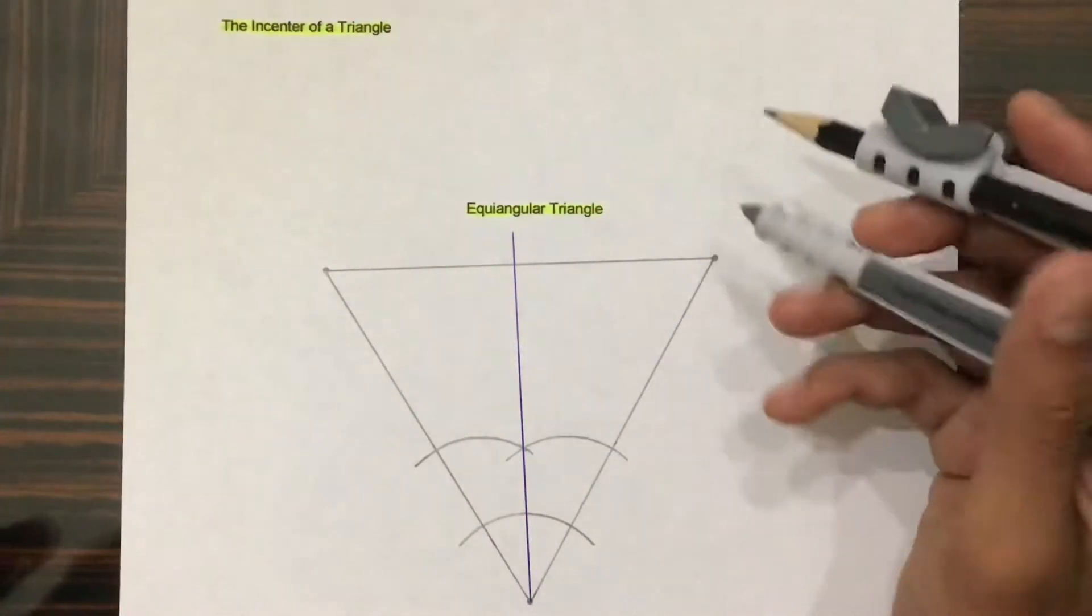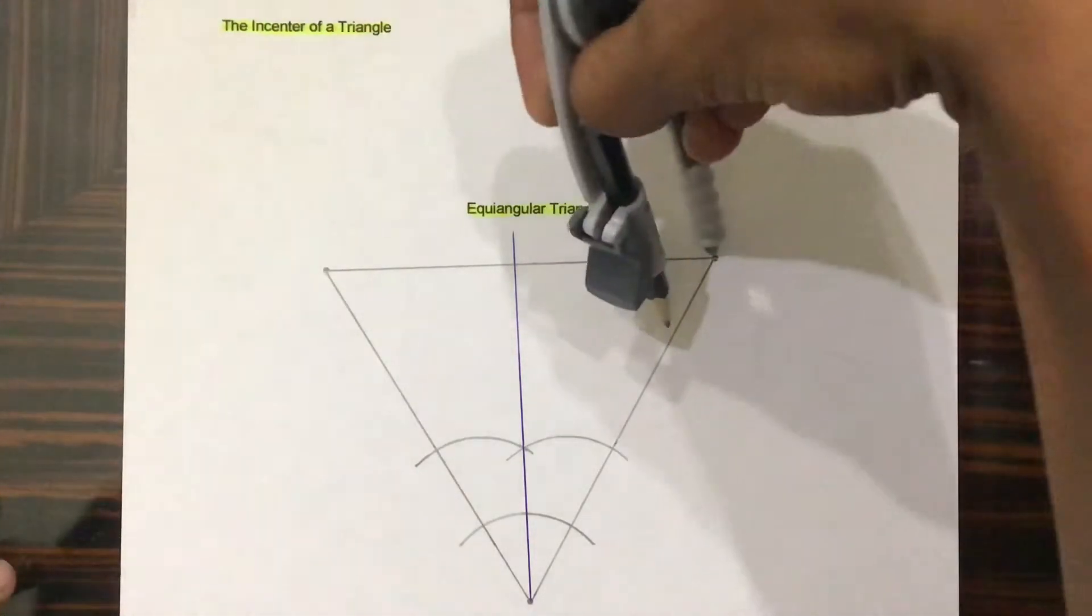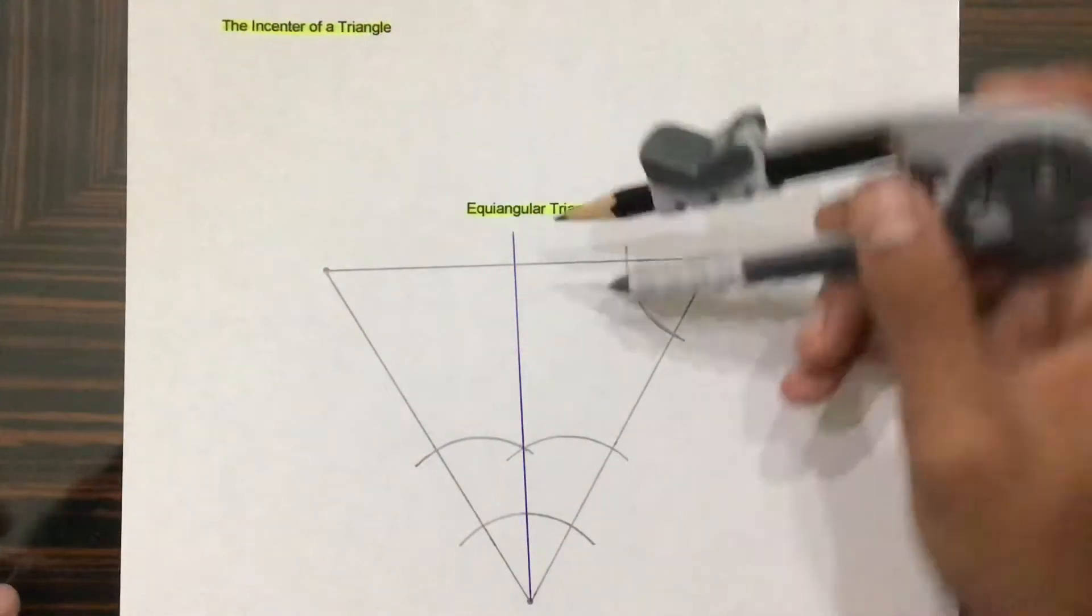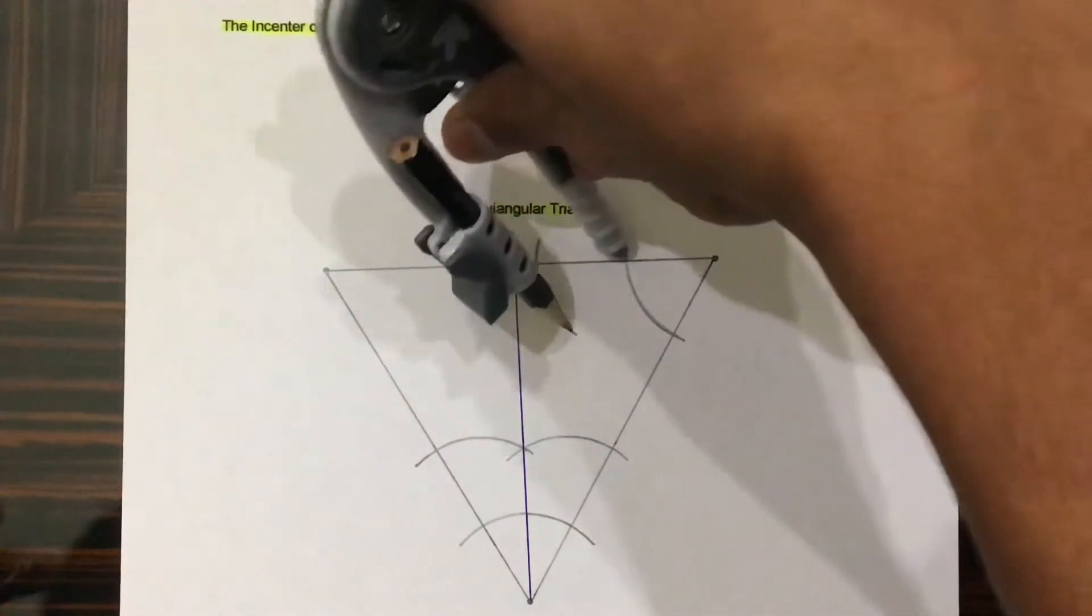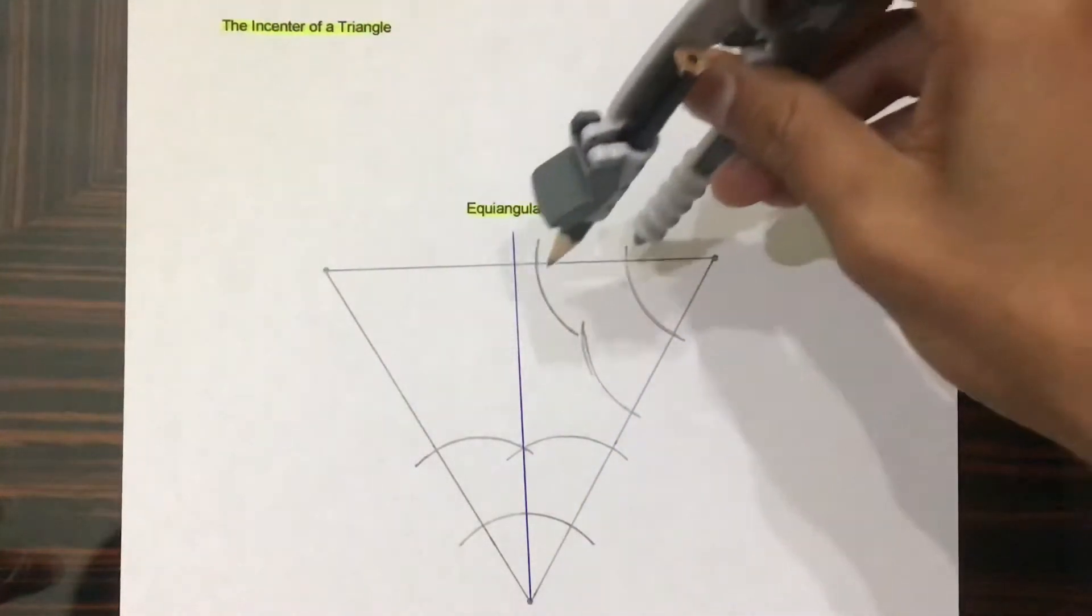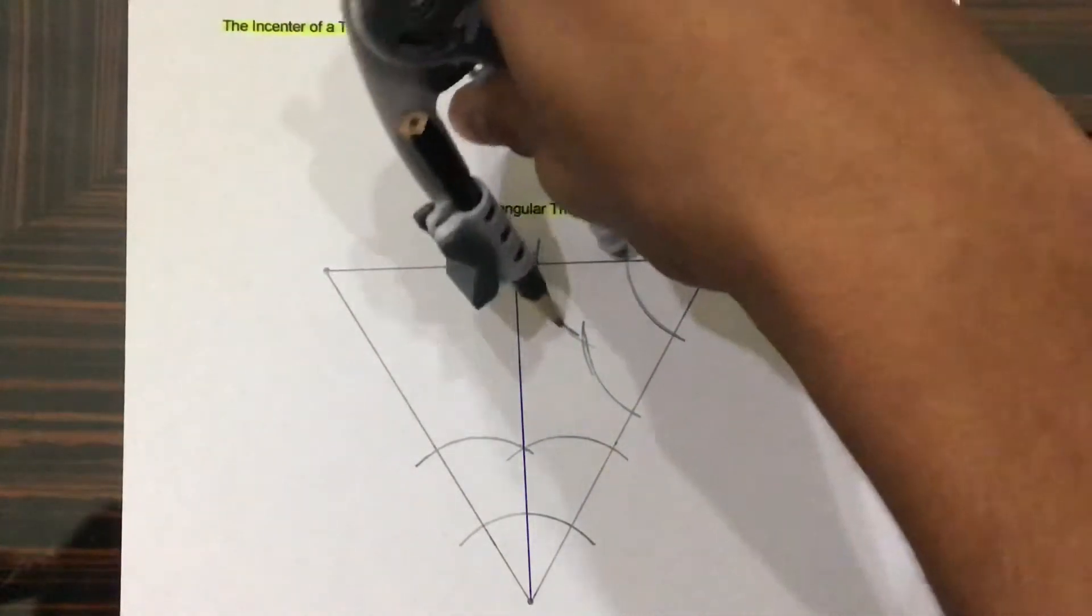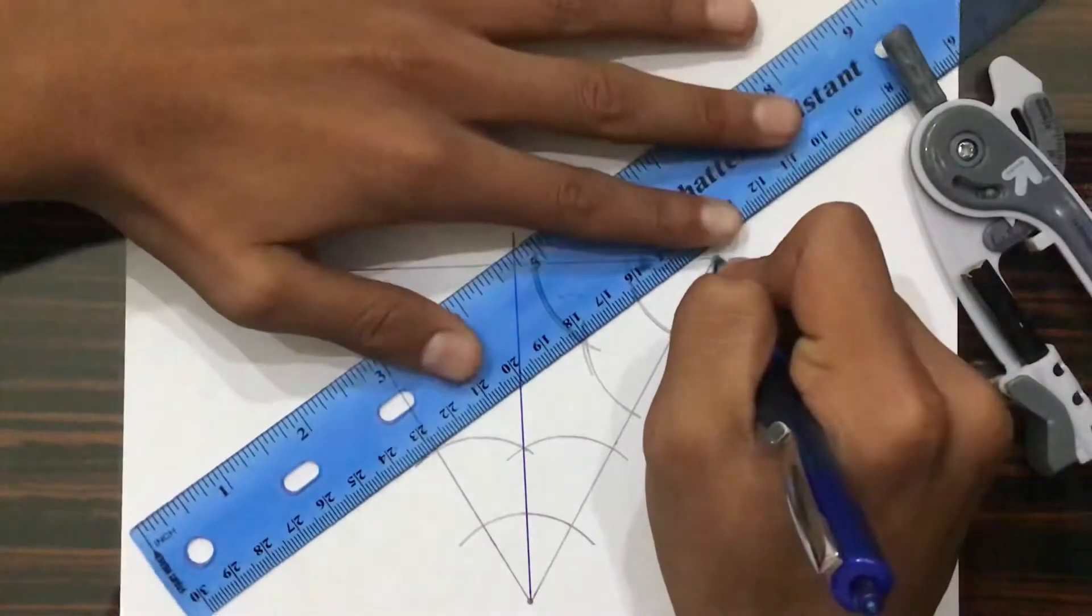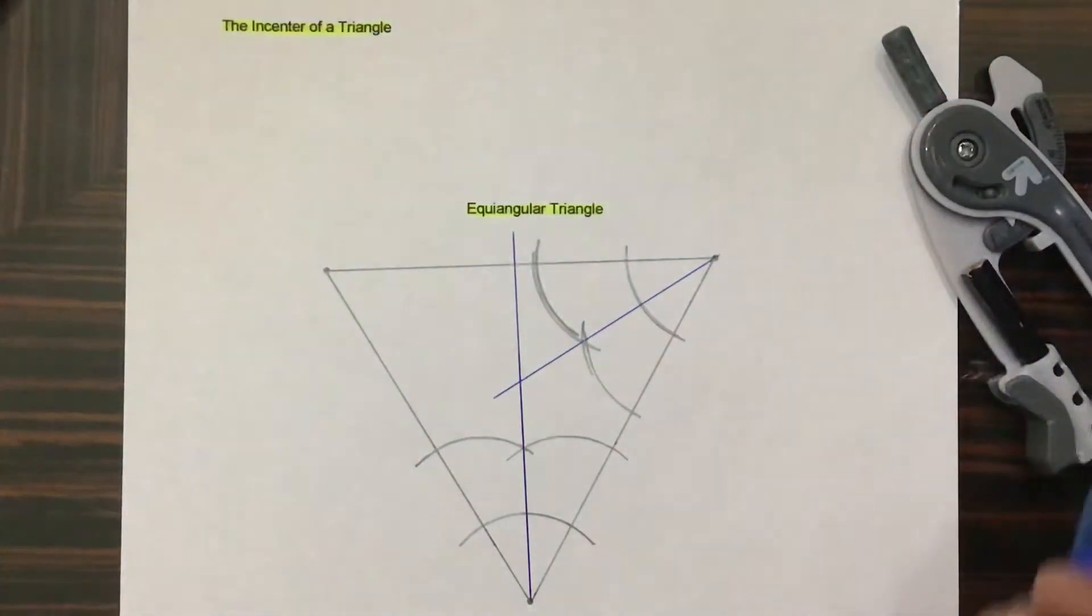And we repeat the same process for vertices two and three. And here is the second bisector for vertex number two.